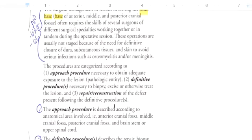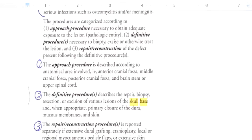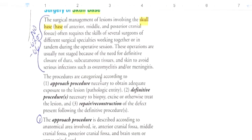Looking at the guidelines, it talks about approach procedures and definitive procedures. The approach procedure is described according to the anatomical area involved, and the definitive procedure describes the repair, biopsy, resection, or excision. According to the guidelines, the surgical management of lesions involving the skull base often requires the skills of several surgeons of different specialties working together or in tandem. These operations usually are not staged because of the need for definitive closure — once the area is exposed, you need to go in and take care of the lesion.